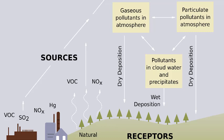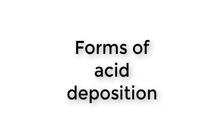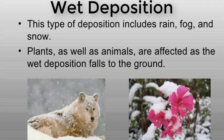Acid rain results when sulfur dioxide (SO2) and nitrogen oxides (NOx) are emitted into the atmosphere and transported by wind and air currents. The SO2 and NOx react with water, oxygen, and other chemicals to form sulfuric and nitric acids. These then mix with water and other materials before falling to the ground.